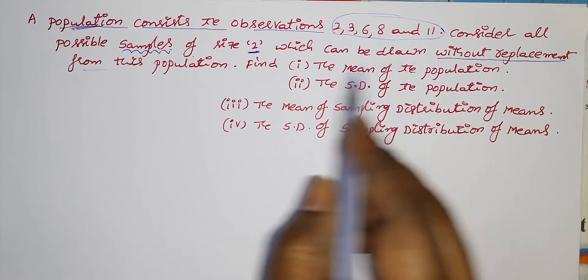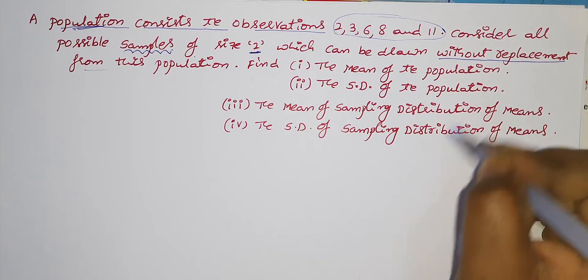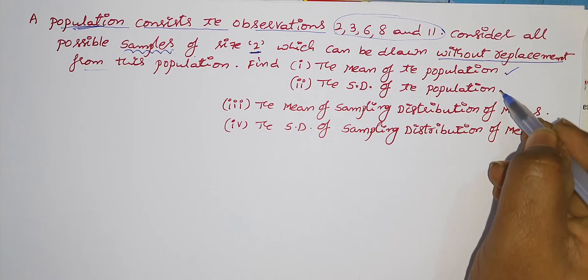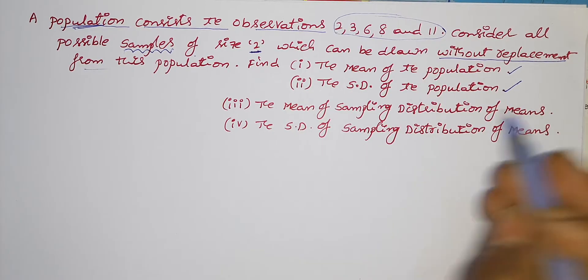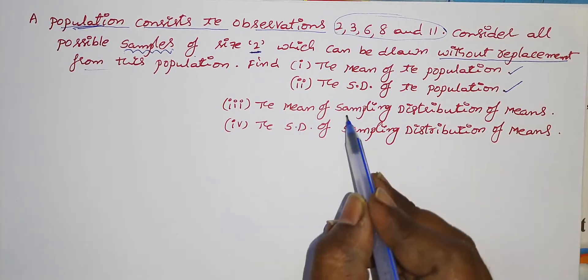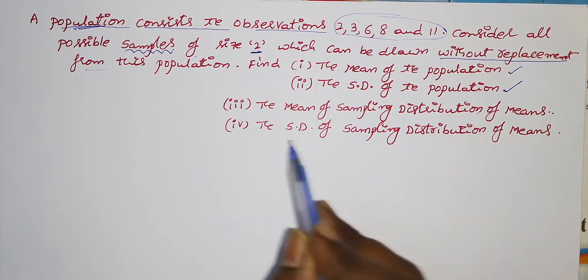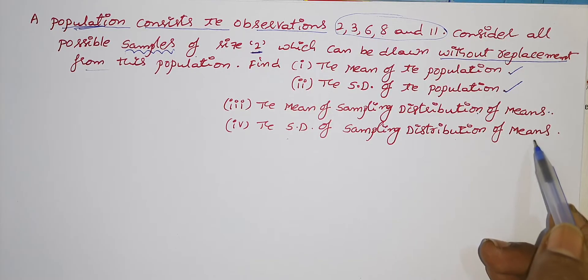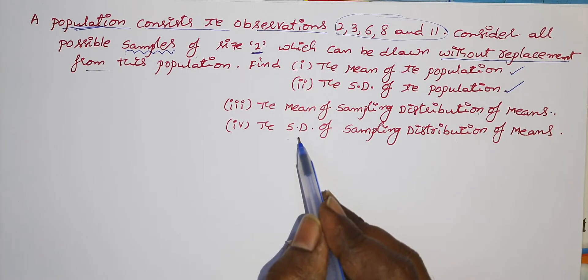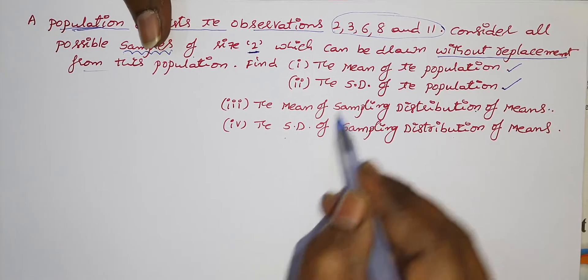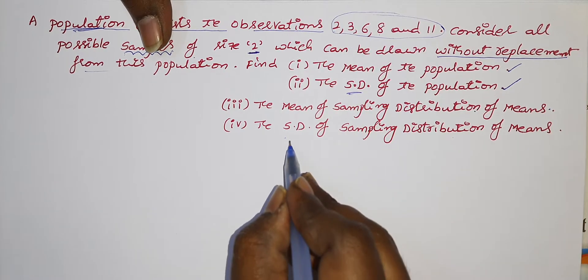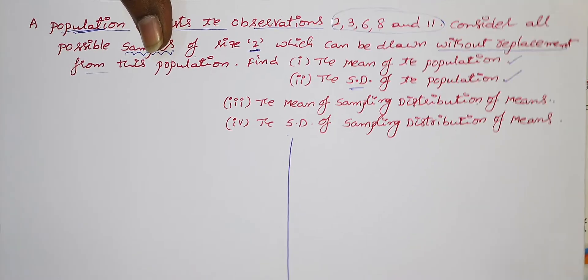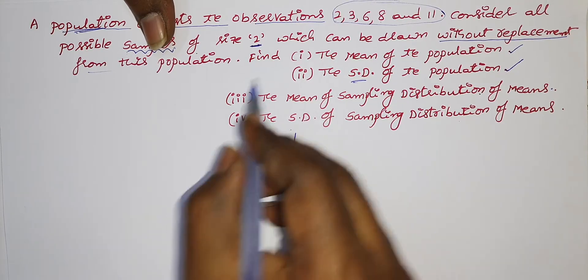We also have to find the following four things: first, the mean of the population; second, the standard deviation of the population; third, the mean of the sampling distribution of means; and fourth, the standard deviation of the sampling distribution of means. I will explain everything one by one.